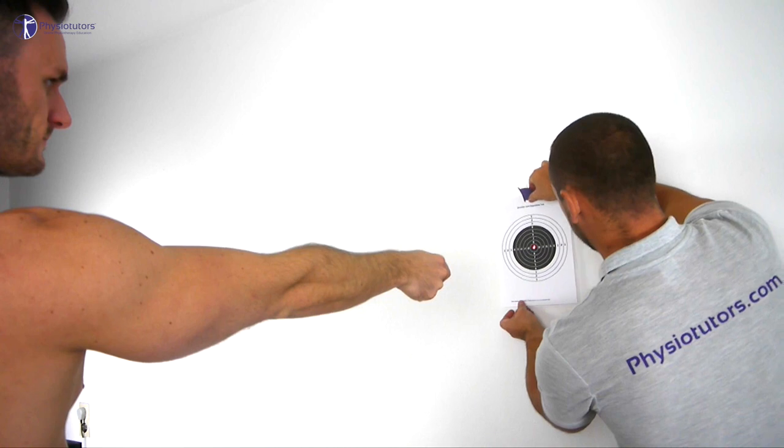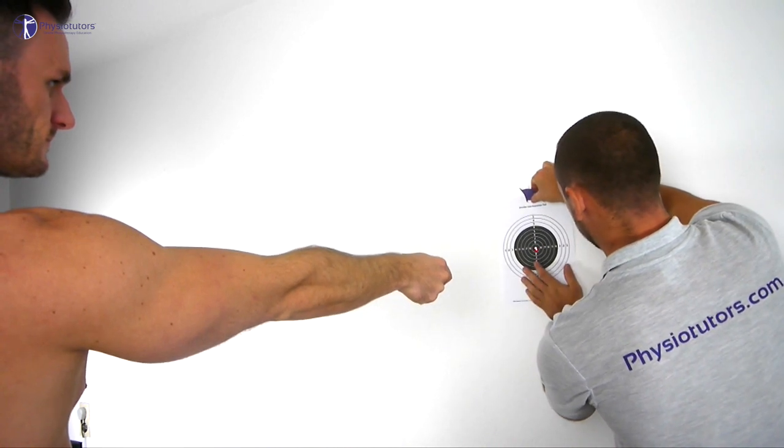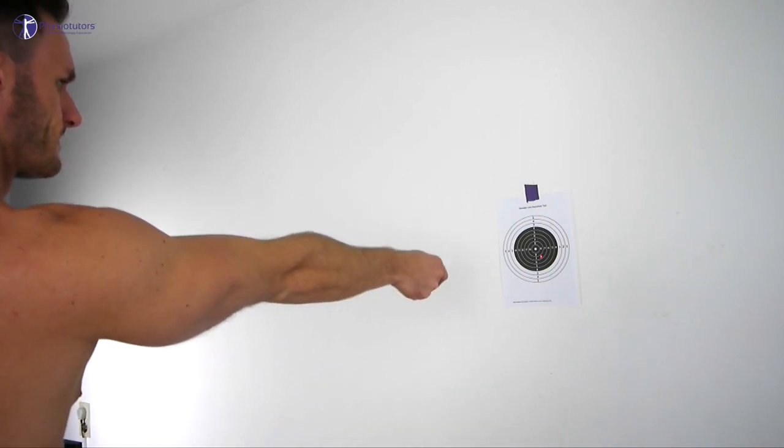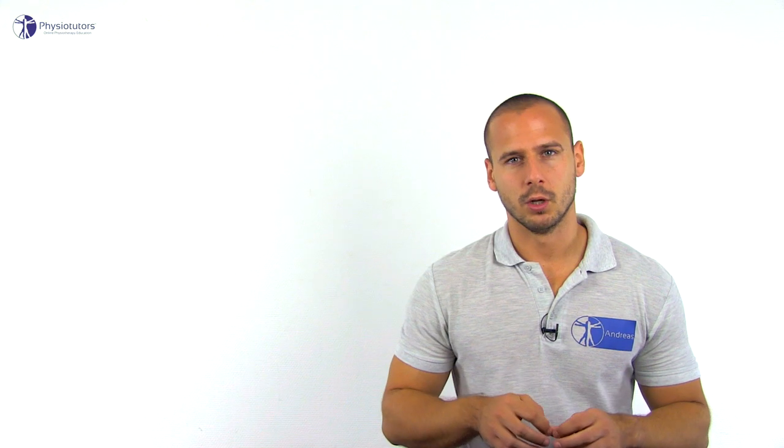Attach the scoreboard to the wall so that the center is aligned with the laser pointer. We will assess flexion, abduction, and returning from external rotation. The patient is then allowed three practice rounds with eyes open. The fourth attempt is done with the eyes closed and you will record their score.